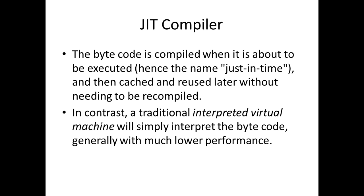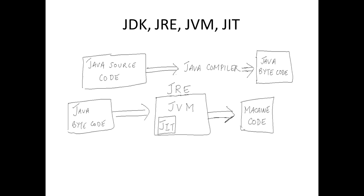The JVM contains a Just-In-Time (JIT) compiler which compiles bytecode just before it is executed — hence the name. This compiled code is then cached and reused later without needing to be recompiled. In contrast, a traditional interpreted virtual machine simply interprets the bytecode each time, resulting in lower performance because nothing is cached.